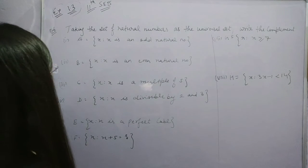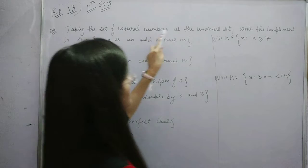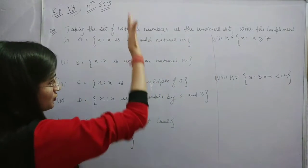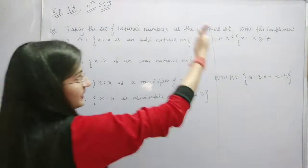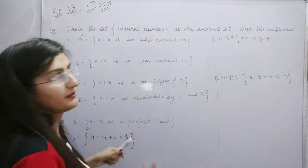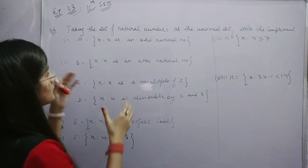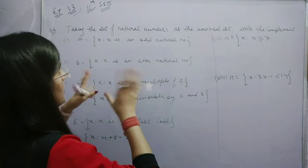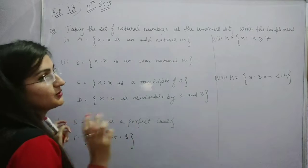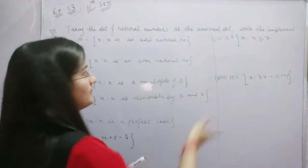Our next question: taking a set of natural numbers as a universal set, write the complement. So what the many parts are — it is a universal set. Let us explain the complement.